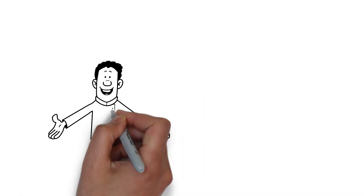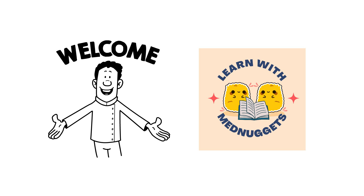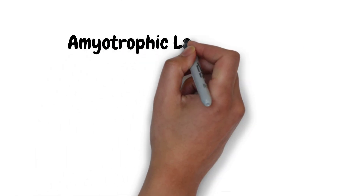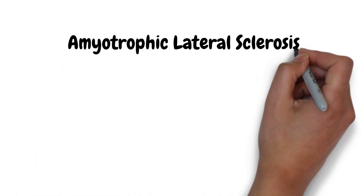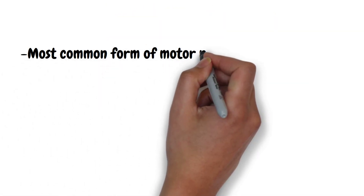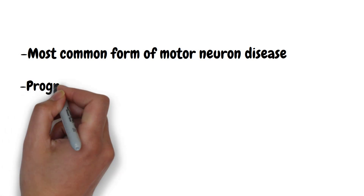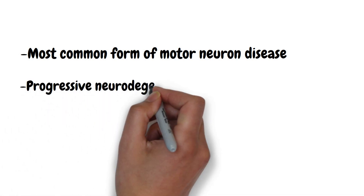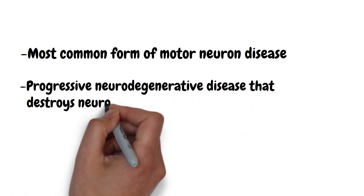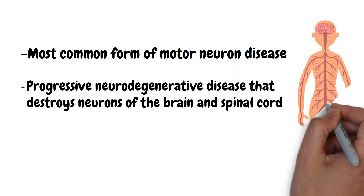Welcome back to Learn with MedNuggets. In this video, we will be talking about amyotrophic lateral sclerosis. Amyotrophic lateral sclerosis is the most common form of motor neuron disease. It's a progressive neurodegenerative disease that destroys neurons of the brain and spinal cord.